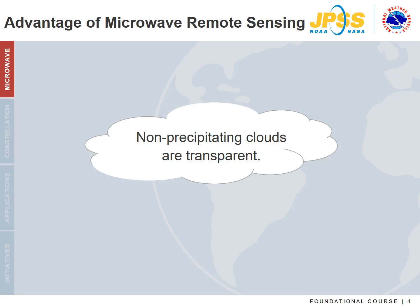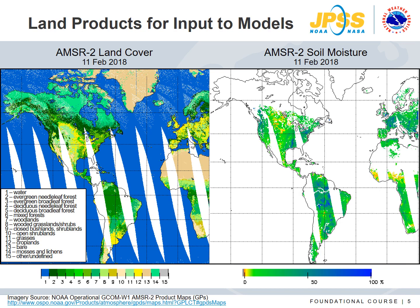A major advantage of microwave remote sensing is that non-precipitating clouds are transparent. The longer wavelengths can penetrate through cloud cover, except during heavy precipitation, allowing sensing of the surface in almost all weather conditions. Microwave remote sensing makes unique products possible — on the left is a land cover product, and on the right is soil moisture. These land products are beneficial for large-scale analysis and incorporation into numerical models.